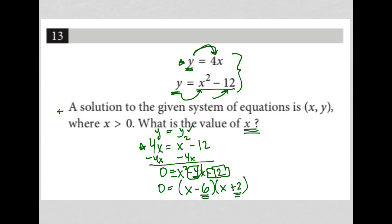So here we have x minus 6 times x plus 2 equals 0, which means I can set each of these individually equal to 0. So x minus 6 equals 0, and x plus 2 equals 0.